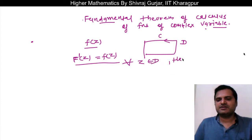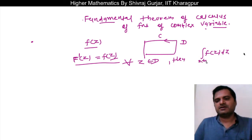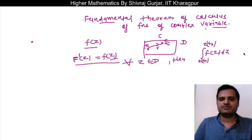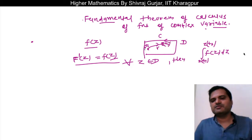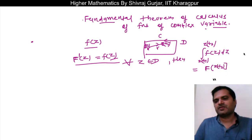Then we say that f(z) has an anti-derivative which exists. And if we parameterize any curve inside this domain, let us say this is some curve gamma with initial point t1 and final point t2 — basically z(t1) and z(t2), the value of z at t1 and the value of z at t2 — then this integral can directly be written as capital F(z(t2)) minus F(z(t1)).